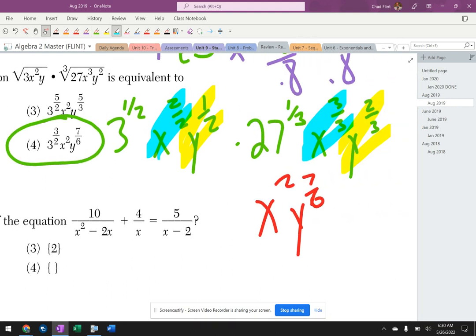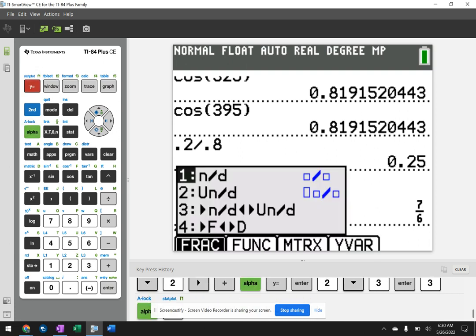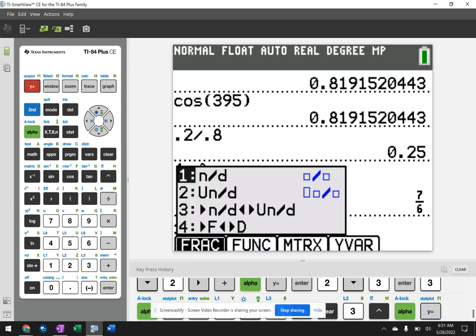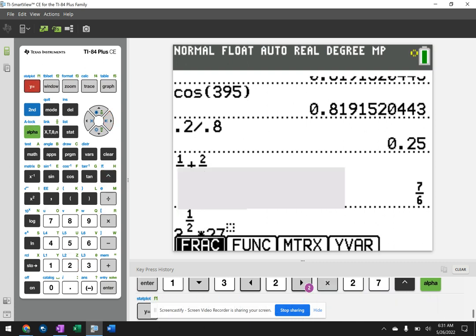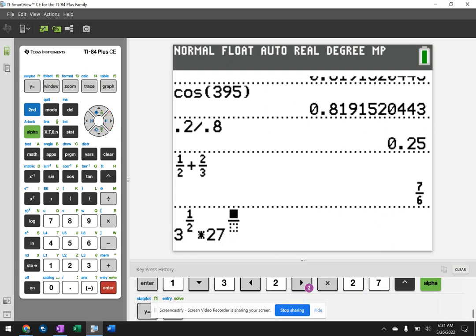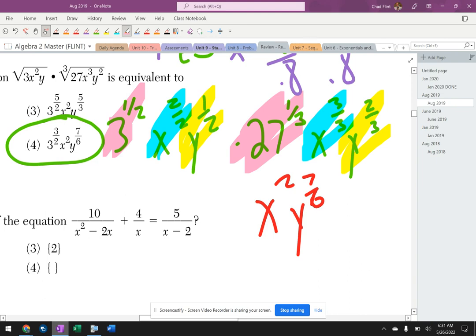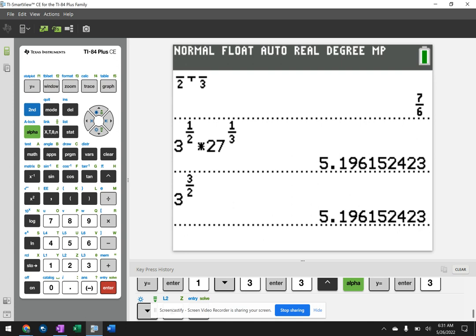All right, now let's say that didn't help, like there were two choices. I'm going to take the calculator and do this. I'm going to do 3 to the 1/2 times 27 to the 1/3. Yeah, it gives me that. Obviously that's not there, but I'm going to go 3 to the 3/2, and then I can tell the number.